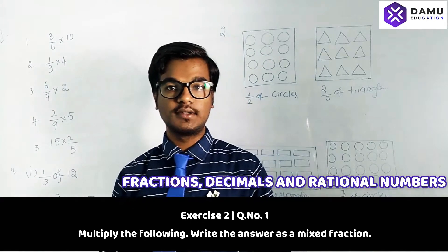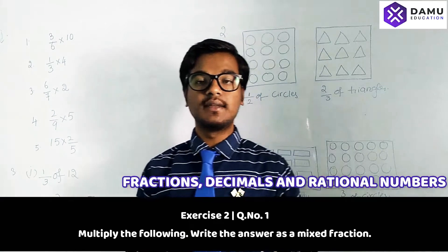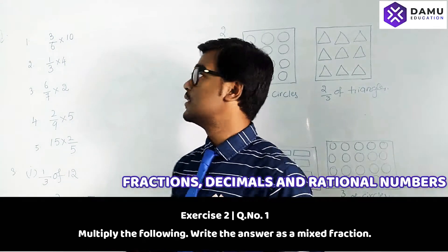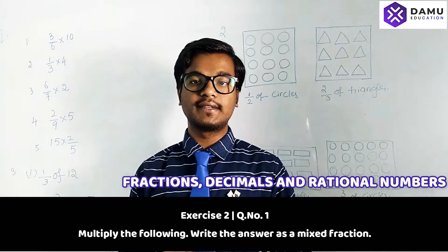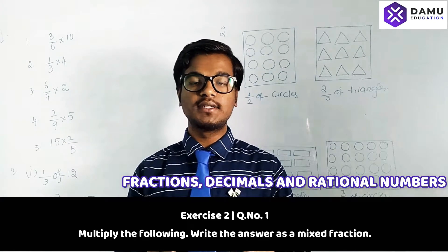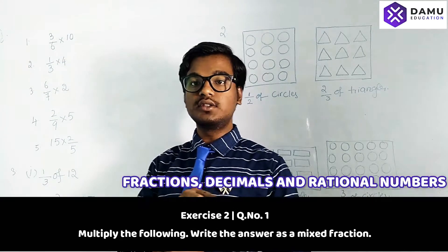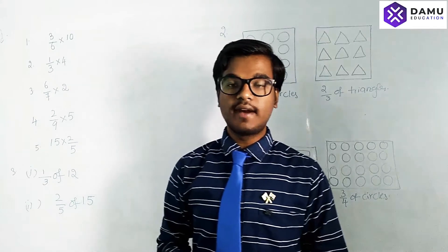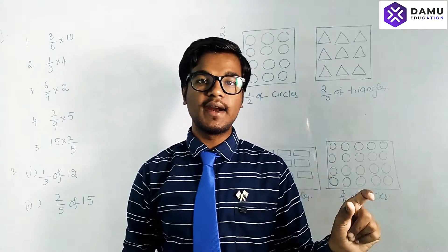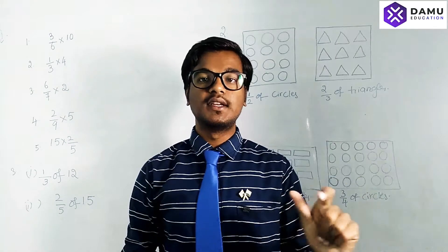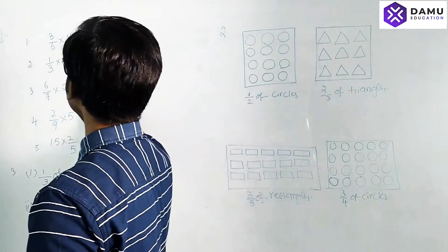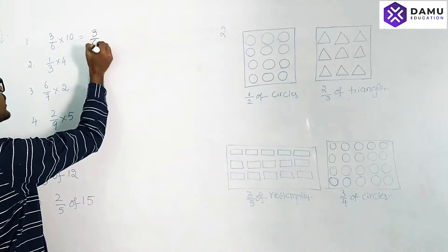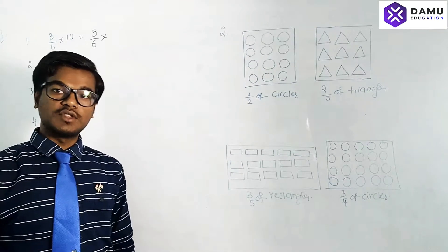Here we need to express the given questions as mixed fractions. When multiplying fractions, first we have to check if both are fractions. If there is an integral part, we have to take it into the numerator. So 3/6 is one fraction multiplied with 10, and 10 should be in the numerator. We multiply numerator with numerator and denominator with denominator.